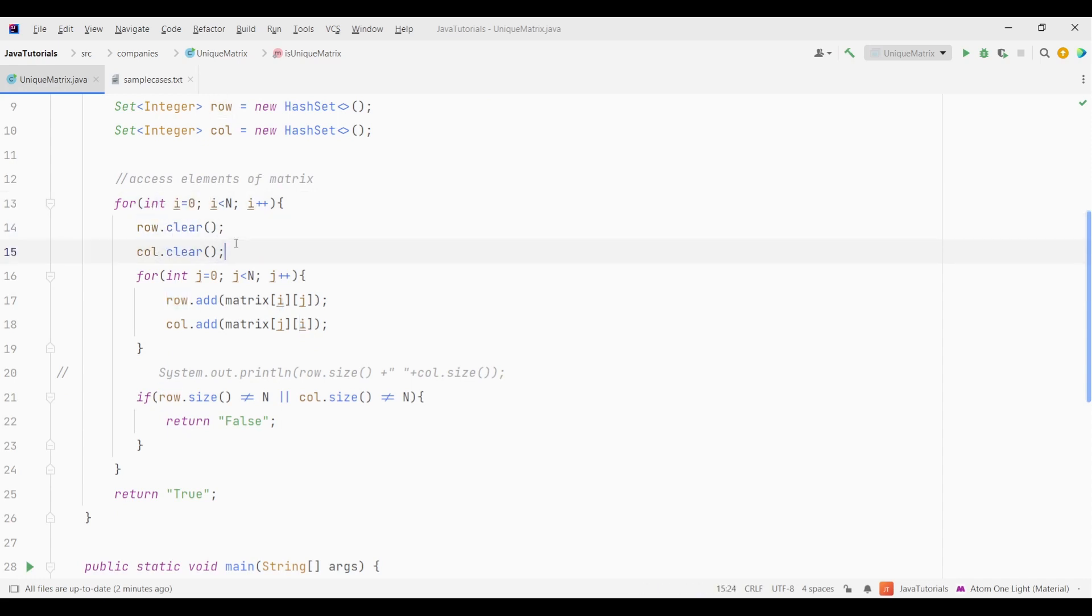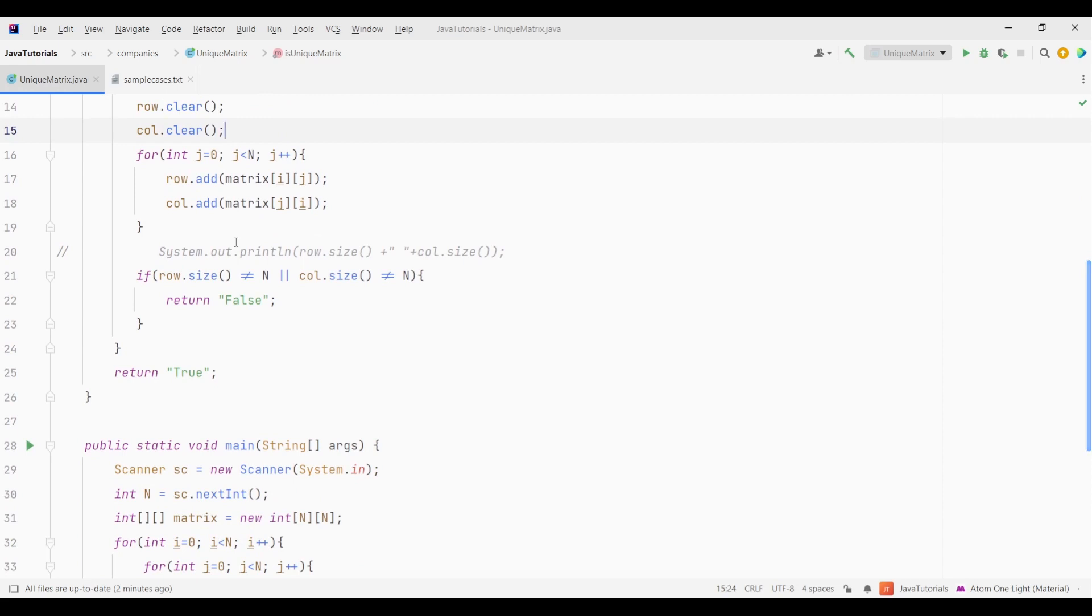Now I have used row.clear and col.clear to clear the sets since after checking each row and column the sets will contain values of previous row and column. Thus we will clear them before moving on to the next iteration.